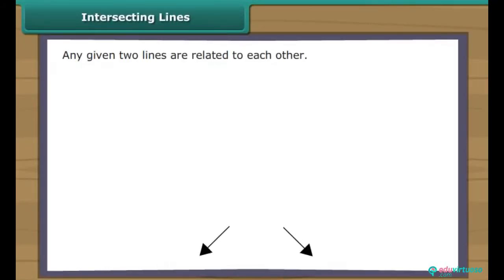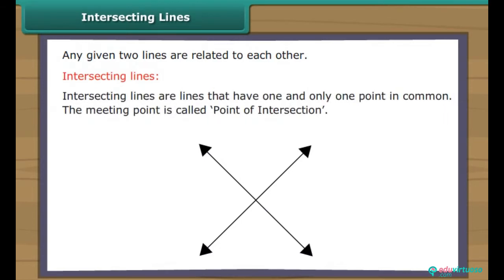Two lines are related to each other in different ways. Let us look at each way separately. Intersecting lines are lines that have one and only one point in common. This meeting point is called the point of intersection.